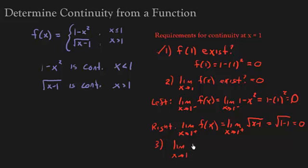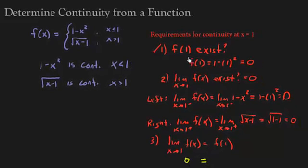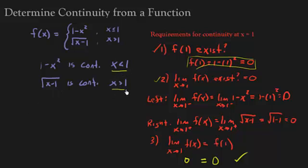Does the limit as x approaches 1, which by the way equals 0, does that equal f of 1? Well, we just said that the limit, as x approaches 1 equals 0. And we set up here that f of 1 equals 0. So check. So every single condition or requirement for continuity has been satisfied. So we knew that we are continuous when x is less than 1 and greater than 1. We now know f of x is continuous at x equals 1. So f of x is continuous. Well, it's less than 1, greater than 1, and at 1, it's continuous on the whole number line. So from negative infinity to infinity.